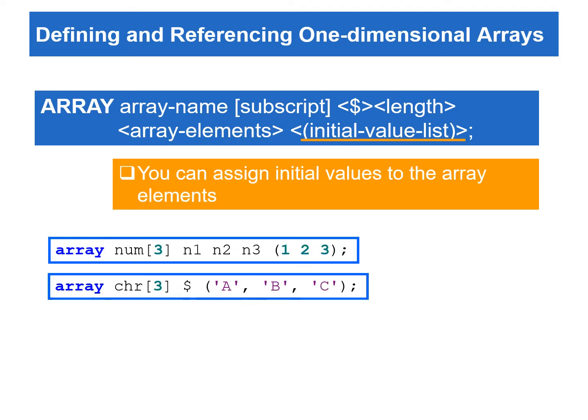We can also assign initial values to the array elements when creating a group of variables by using the array statement. When any or all elements in an array are assigned with initial values, all elements in the array would act as they are named in a retain statement. For example, the first array statement creates n1, n2, and n3 variables and initializes them with the values 1, 2, and 3 respectively. The second array statement creates chr1, chr2, and chr3 variables and assigns them with values of a, b, and c. The dollar sign is necessary because chr1, chr2, and chr3 are not previously defined in the data step.